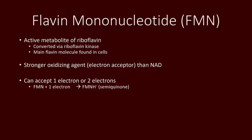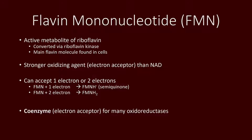FMN can also accept one or two electrons, making it very versatile. If it were to accept one electron, it becomes a free radical which we call semiquinone, known as FMNH with a dot — the dot represents the free radical state. If it were to accept two electrons, then it becomes FMNH2.